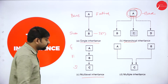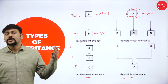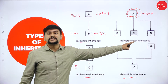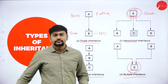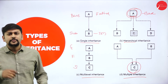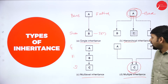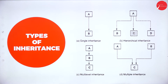Multiple inheritance means you have more than one base class inheriting to one subclass. So if a subclass inherits from multiple base classes, that is called multiple inheritance. Please take a screenshot of these diagrams — they will be very helpful for you to remember the different types.